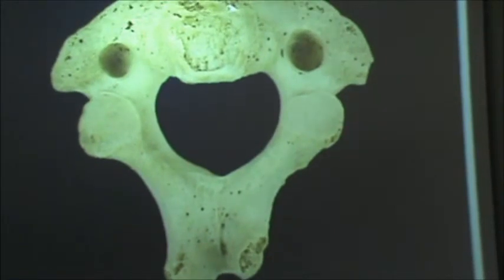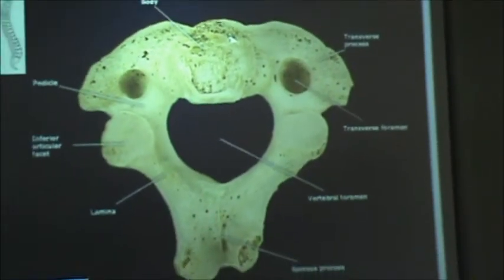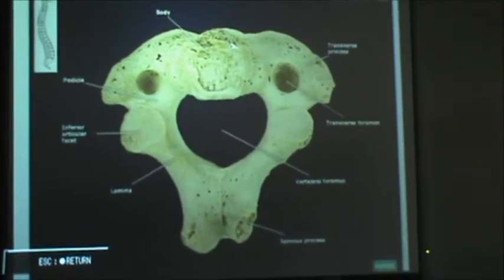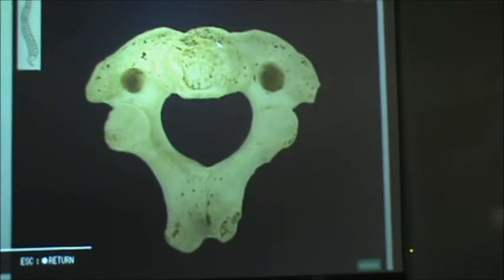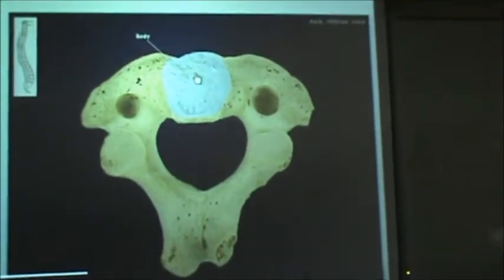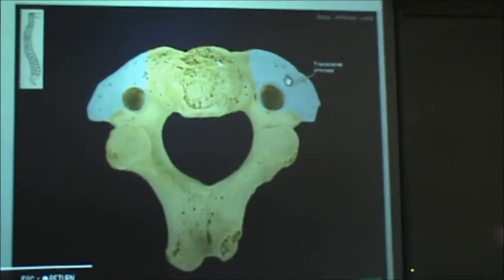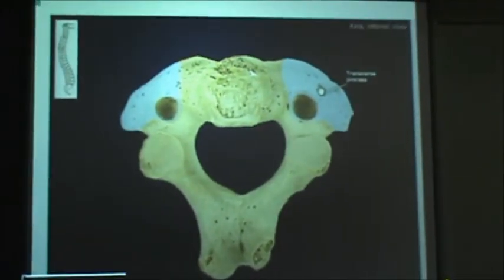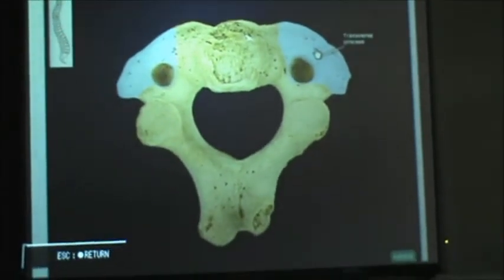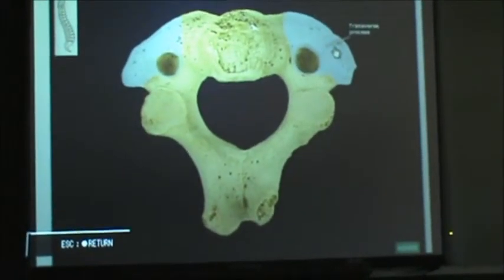Next, we have an inferior view, and we have more exciting structures to identify. We're going to start at the top with the body. And then the transverse processes again — this is what they look like on the other side.